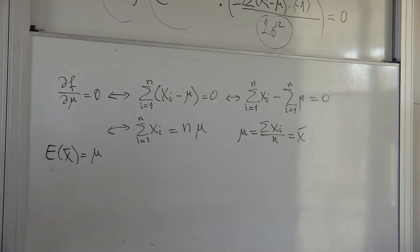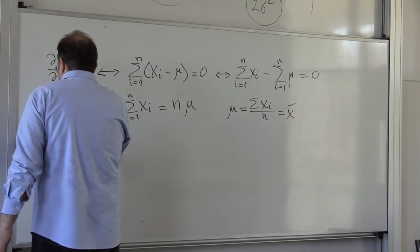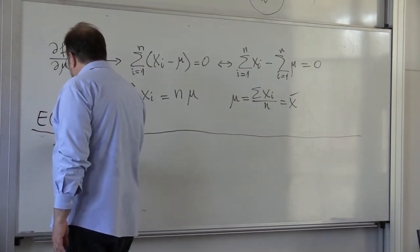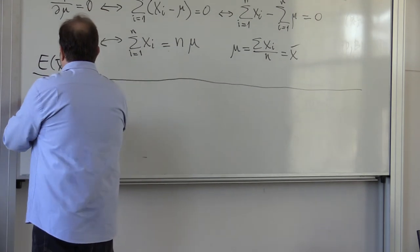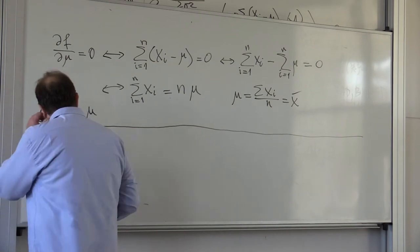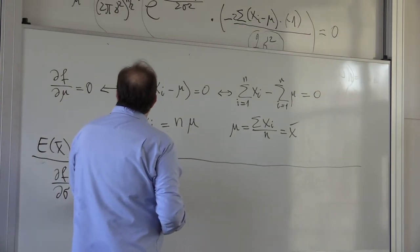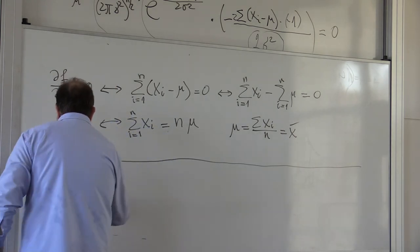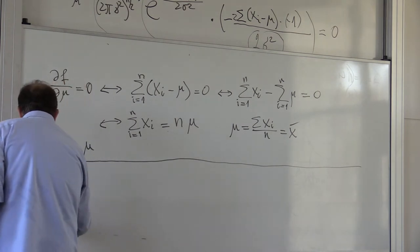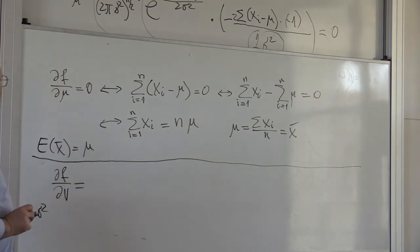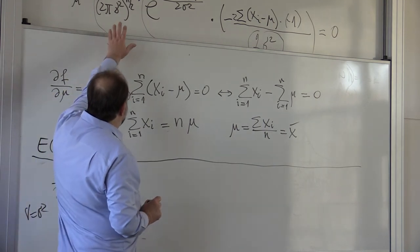Let's now see what the estimation of the variance of the measurements would be. We have to compute the other partial derivative, df over d sigma. Since sigma appears everywhere squared, let me replace sigma squared by v. So v equals sigma squared to simplify the expressions. When I differentiate with respect to v, I get a product, so I have to differentiate each factor.